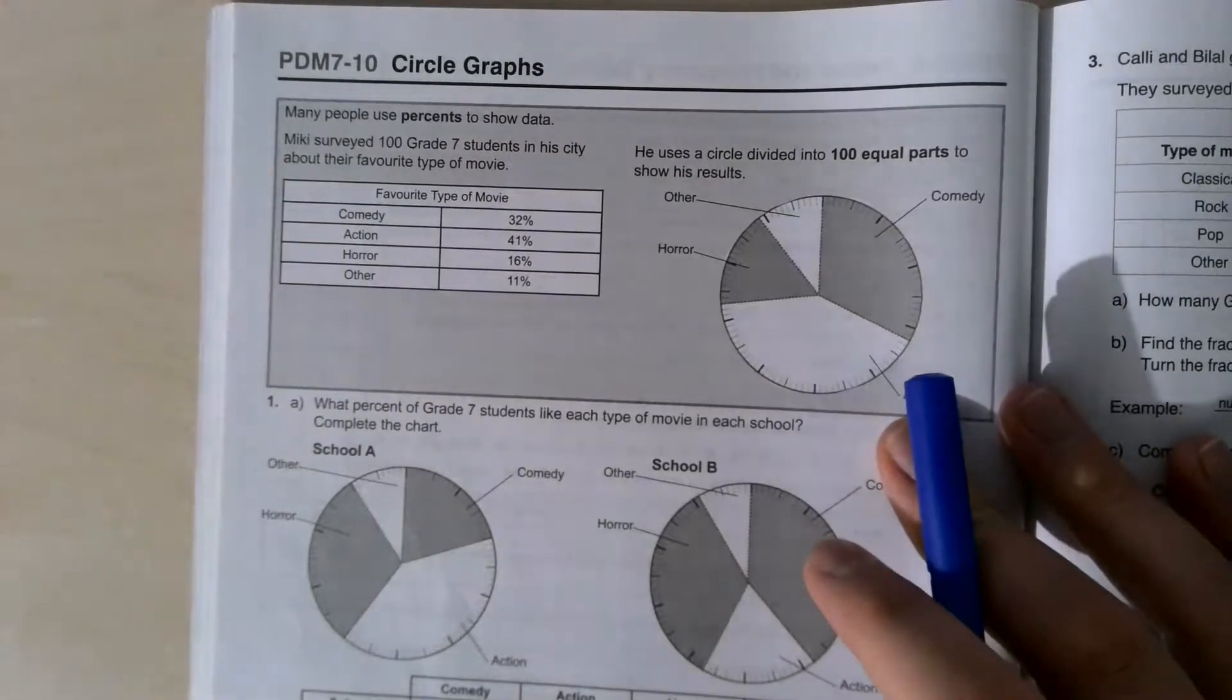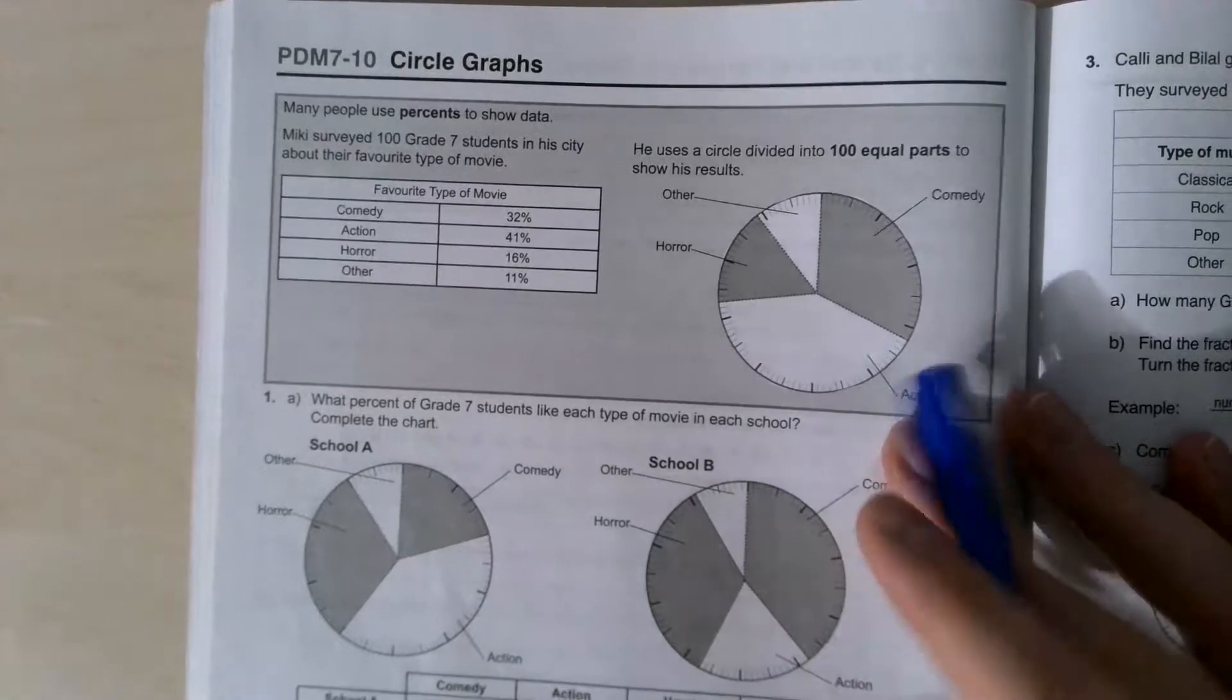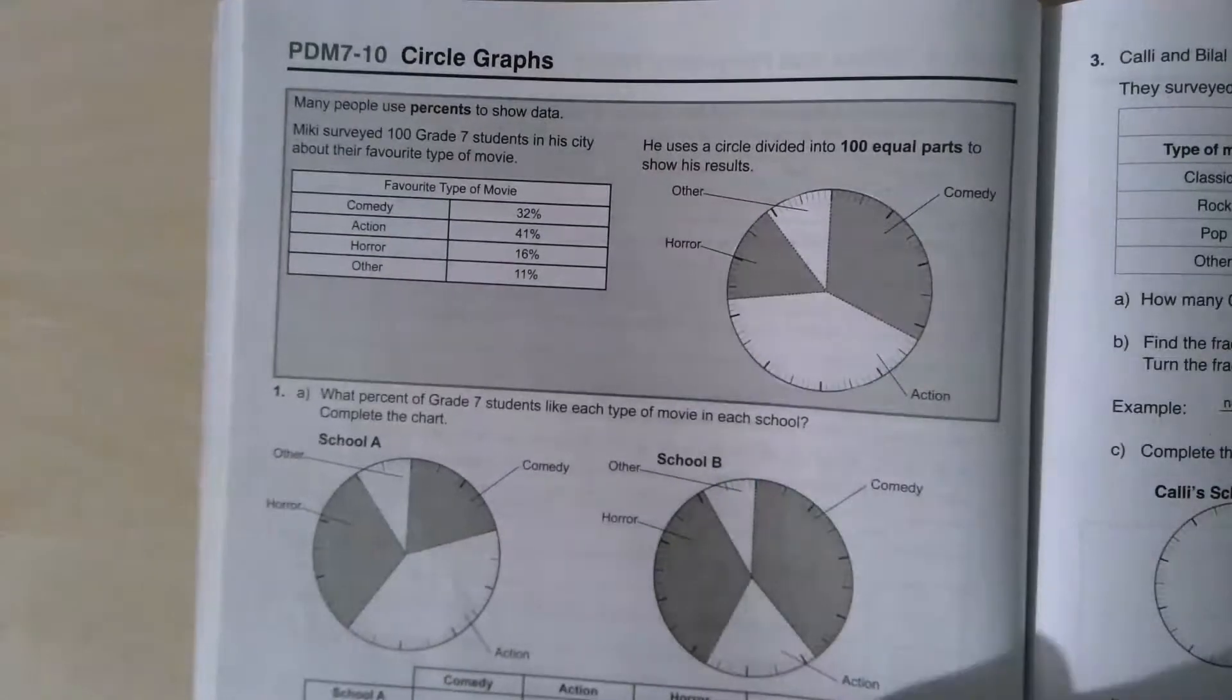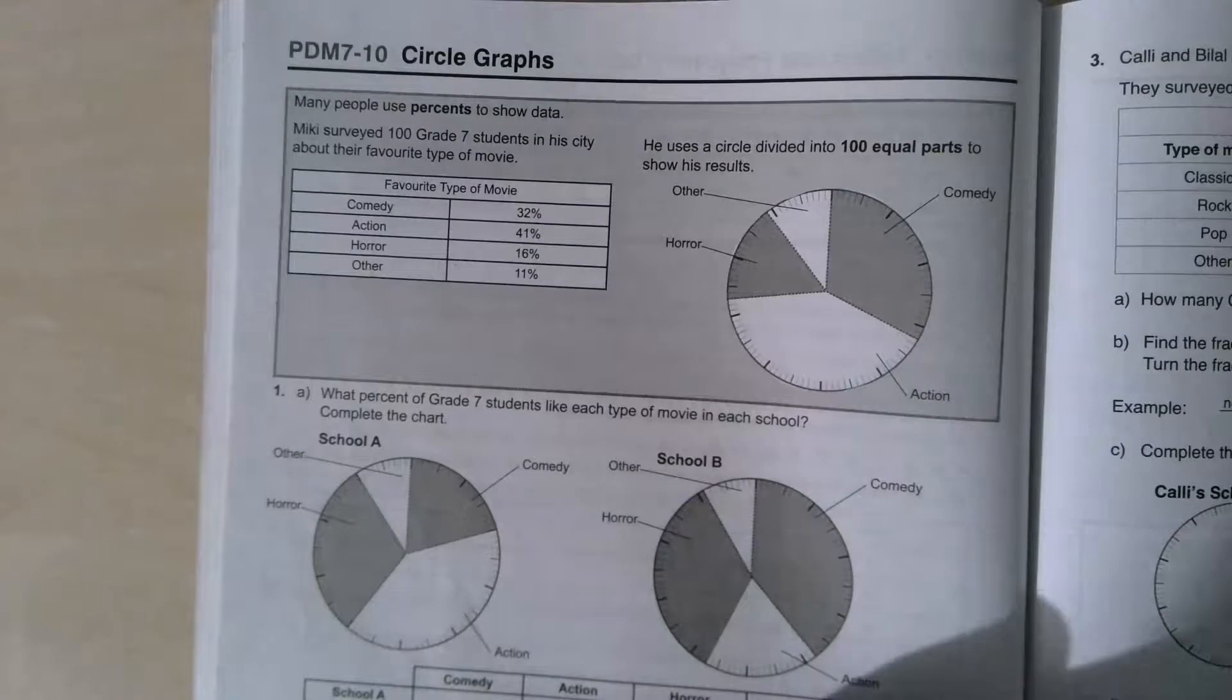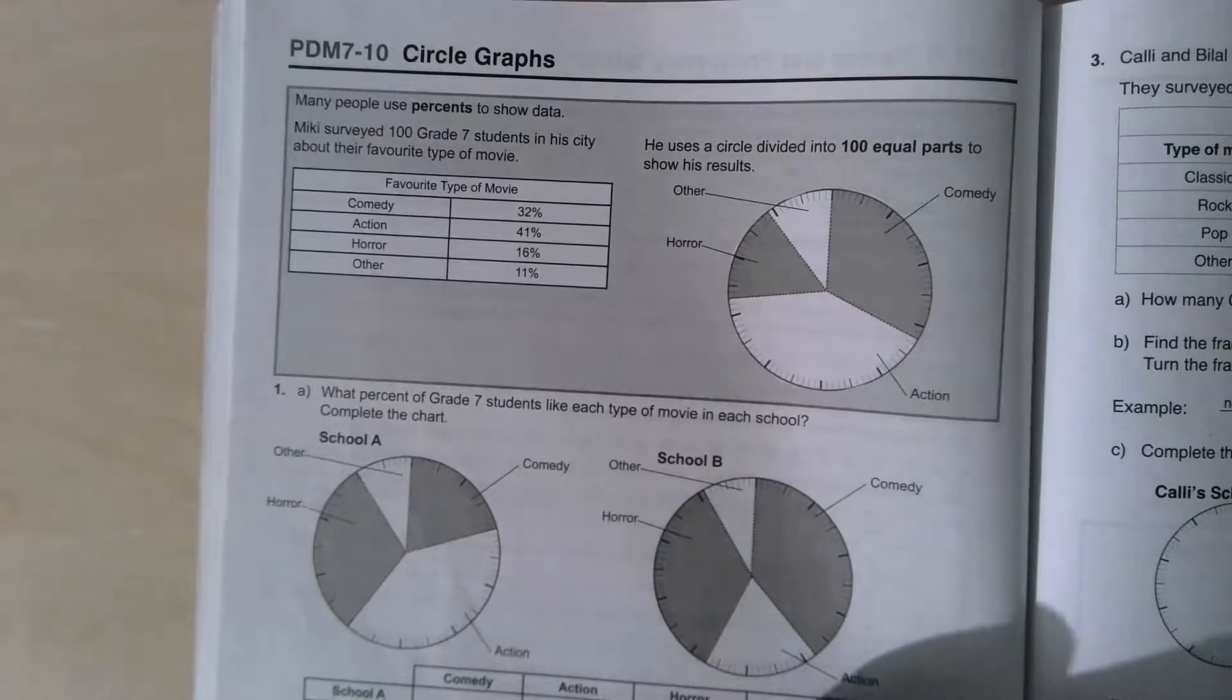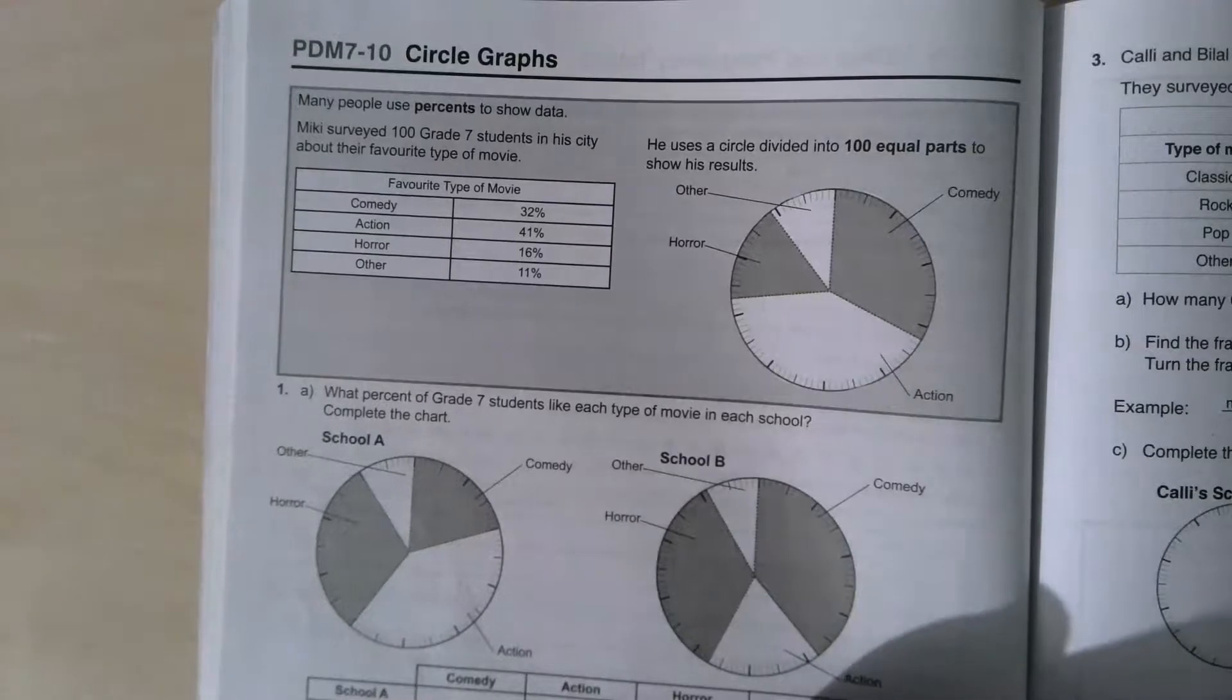So we're going to be working on circle graphs, pie graphs, and these sorts of things in the future. A couple of things we want to know about circle graphs, as is written here. Every single circle graph is always drawn and divided into 100 equal parts because we think of it as percentages. When we do this type of work, it's important for us to understand how do we get percentages in the first place and then how do we draw it in correctly.